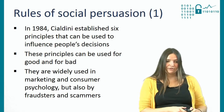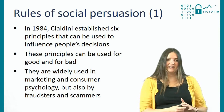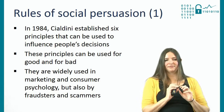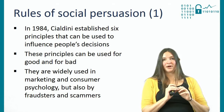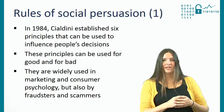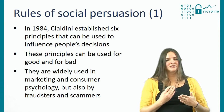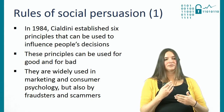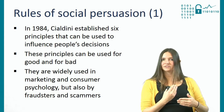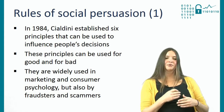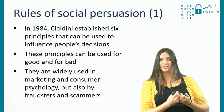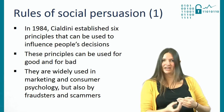In 1984, Cialdini established six principles of how we can be affected by other people and how they can influence our decisions. These principles can be used for good and for bad — on one hand they're used in marketing and consumer psychology, but they're also being used by fraudsters and scammers, because they allow you to change someone else's behaviour.